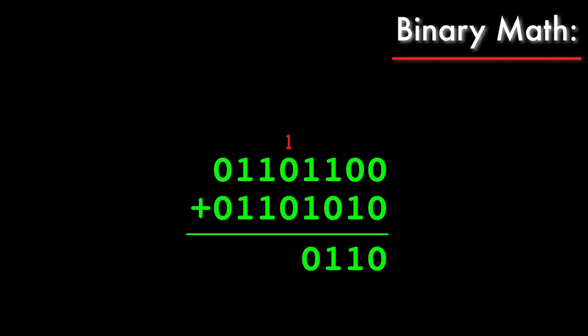Now we have 1 plus 0 plus 0, which is 1 again. 1 and 1 gives us another 1 0, so we carry again. Now the sum is 3, which is 1 1 in binary. We carry the 1 and write another 1 in the sum. Finally we have 1 plus 0 plus 0, which is 1.